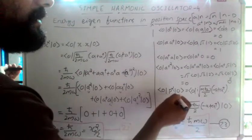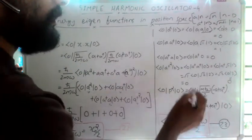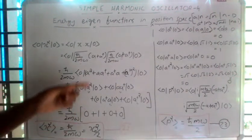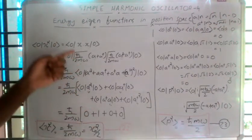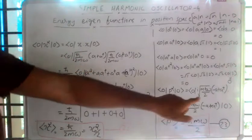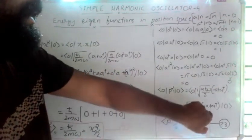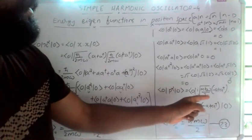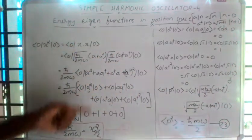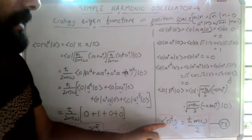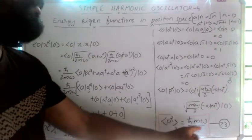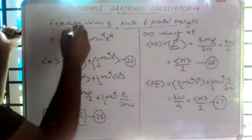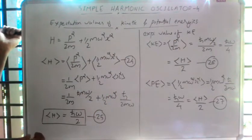In the same way we find the expectation value of p² in the ground state. The momentum operator is p̂ = i under root m·ℏ·ω over 2 times (-a + a†). Following similar steps to the x² calculation, the expectation value of p² equals ℏ·m·ω over 2.